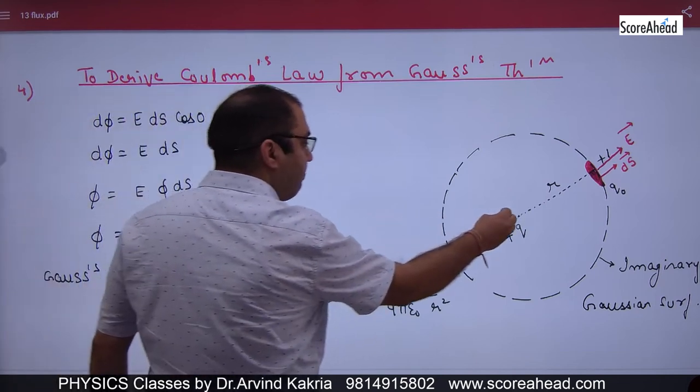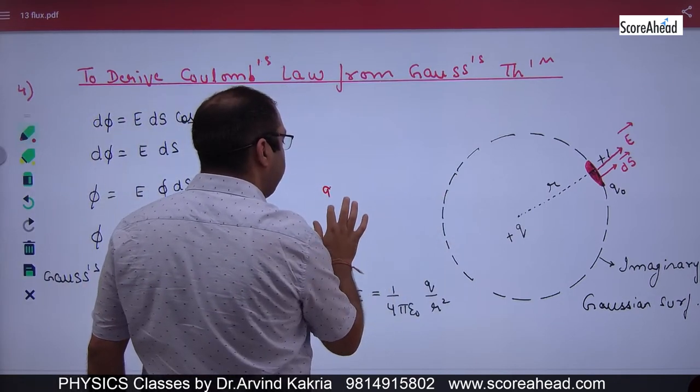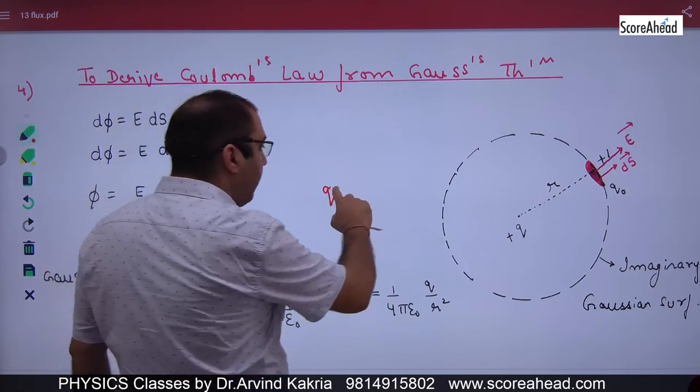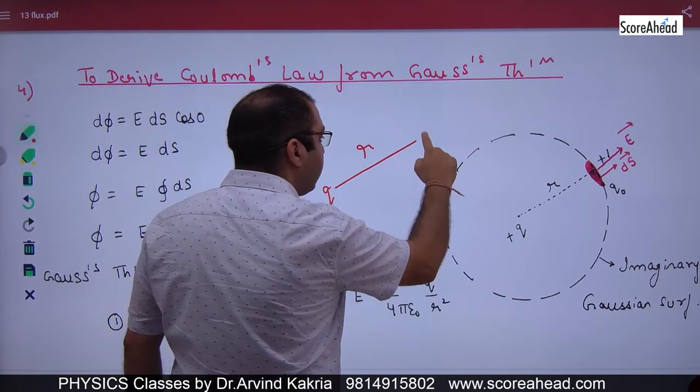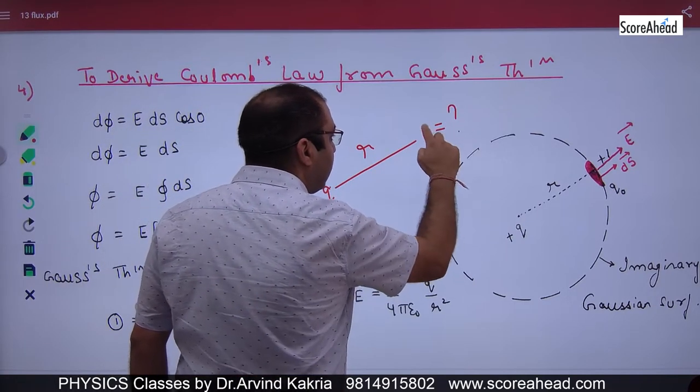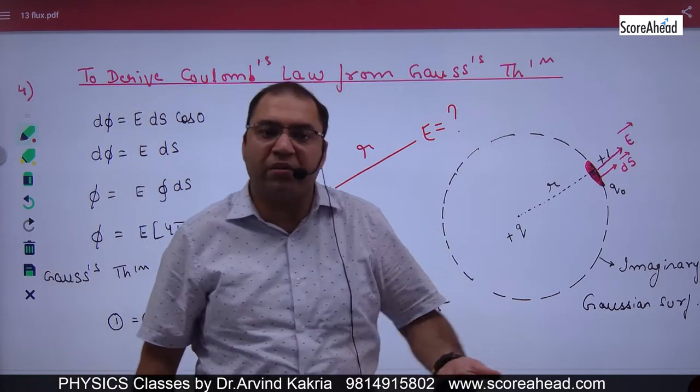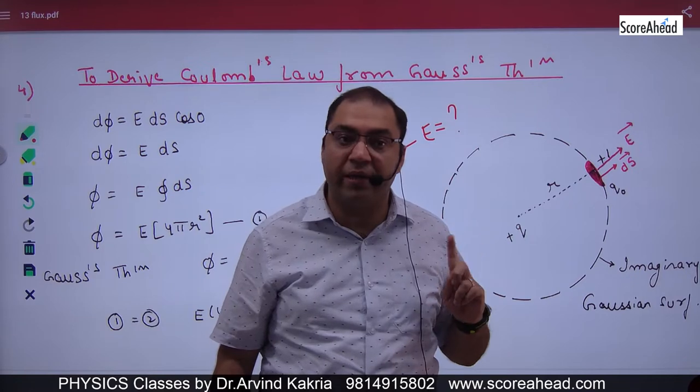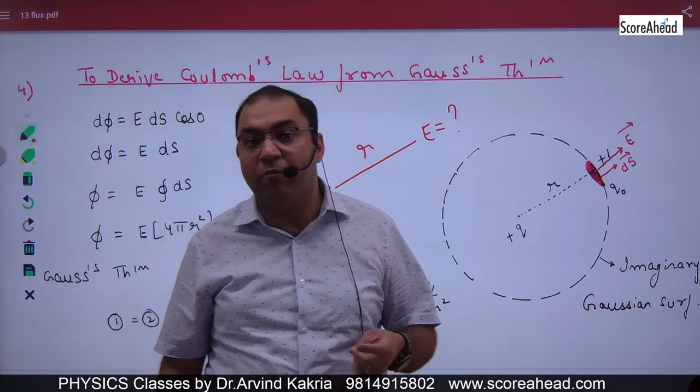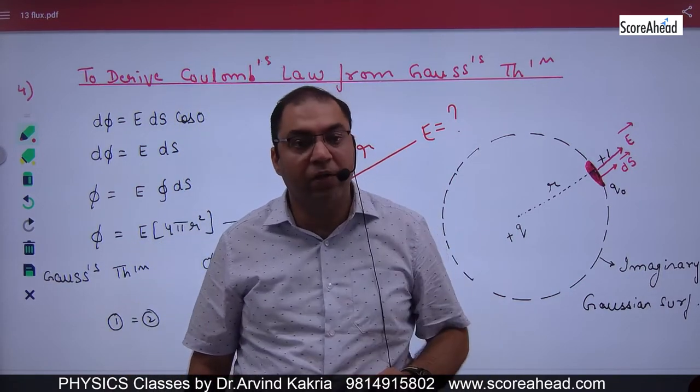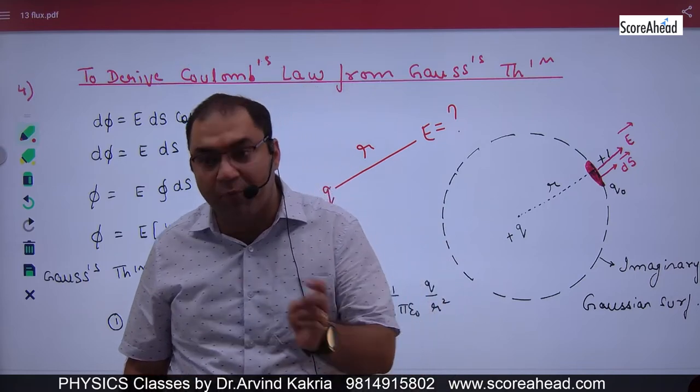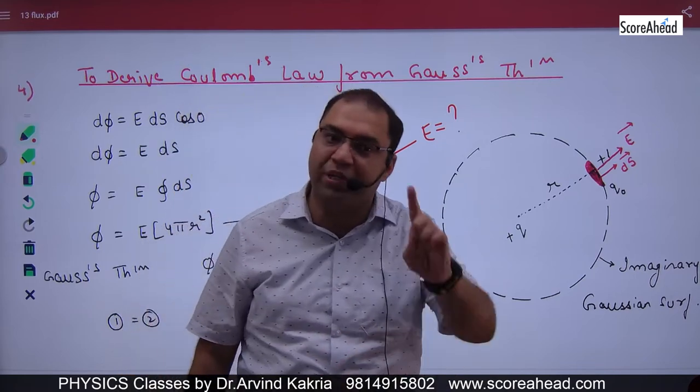If you have a point charge Q, you tell me the value of E from the point charge. What do you know about this? 1 by 4π epsilon q by r square. No, you don't tell me that. Because the formula I had done was by using Coulomb's law. So now since you have to prove Coulomb's law, you can't use that formula.